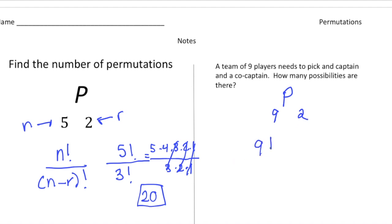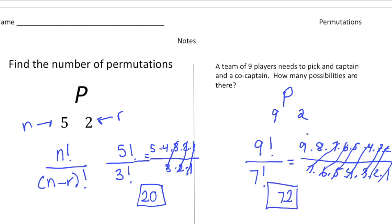So now when we set this up, it's going to be 9 factorial on the top over, well, 9 take away 2 is 7, so 7 factorial on the bottom. And now when we expand this, it's going to be 9 times 8 times 7 times 6 times 5 times 4 times 3 times 2 times 1, all over 7 times 6 times 5 times 4 times 3 times 2 times 1. And you should see a pattern here - these are all going to cancel out, and what's left over is the 9 times 8, which is 72. So there's 72 different ways that nine players could name a captain and a co-captain.